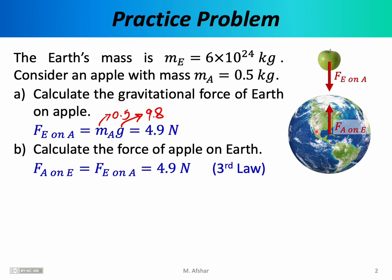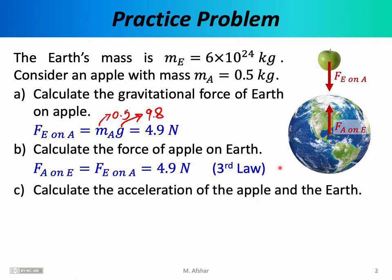This might seem strange that the apple pulls on Earth with the same magnitude of force. You might wonder: why have I seen apples fall to the ground, but never seen the Earth fall upwards towards the apple? To answer that question, we calculate the acceleration of both the apple and the Earth. There's a force on each object that will cause it to accelerate.